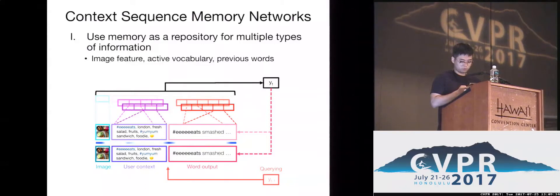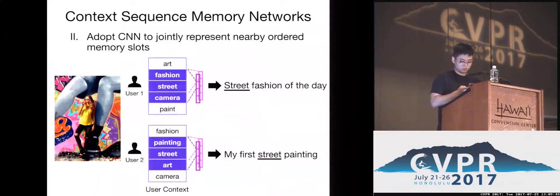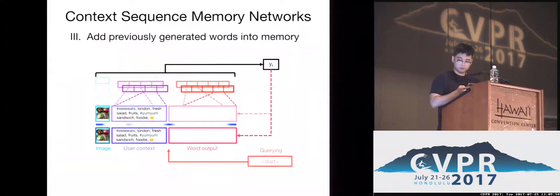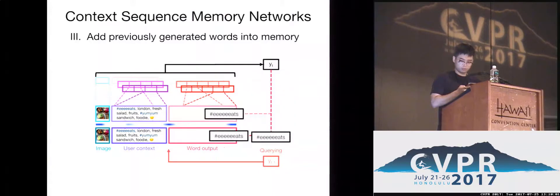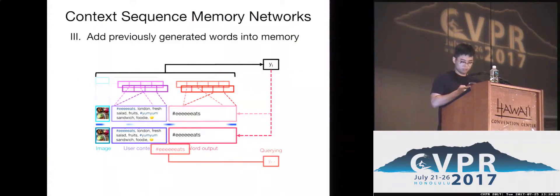First, we upload multiple information on the memory such as image, user context, and generated words. Second, we adopt a CNN memory structure for better context understanding. For example, the word street can be decoded as street fashion or street painting based on nearby words. Third, we append previously generated words into memory to generate sequences without RNN.